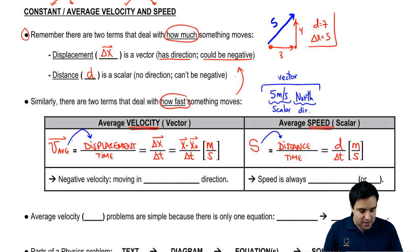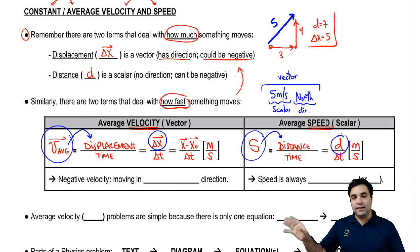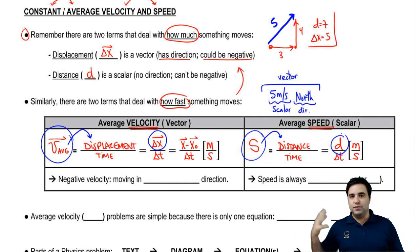Notice that the vector v is defined in terms of a vector delta x. And the scalar s is defined in terms of the scalar d. Vector with vector, scalar with scalar. The distinction between velocity and speed, in everyday language, you use those interchangeably. In physics, there's a big difference. One is a vector, the other one is a scalar.